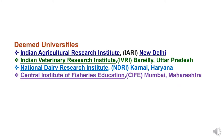The four deemed universities of ICAR are: First, Indian Agricultural Research Institute, IARI, New Delhi. Second, Indian Veterinary Research Institute, IVRI, Izatnagar, Bareilly, Uttar Pradesh. Third, National Dairy Research Institute, NDRI, Karnal, Haryana. And fourth, Central Institute of Fisheries Education, CIFE, Mumbai, Maharashtra.